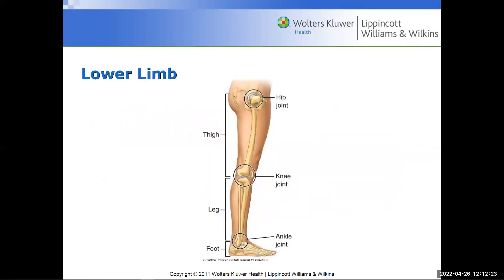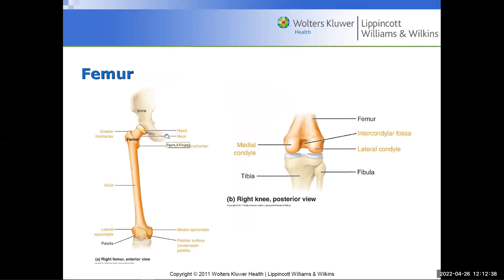The lower limb comes from the hip joint — you have your thigh, knee joint, leg, and foot and ankle joint. For females, because the pelvis is more distended outward, the femur is placed further out, creating a sharper angle down to the knee. This is why females in football tend to have more ACL injuries — it's related to the structural dynamics of how they are physically built.